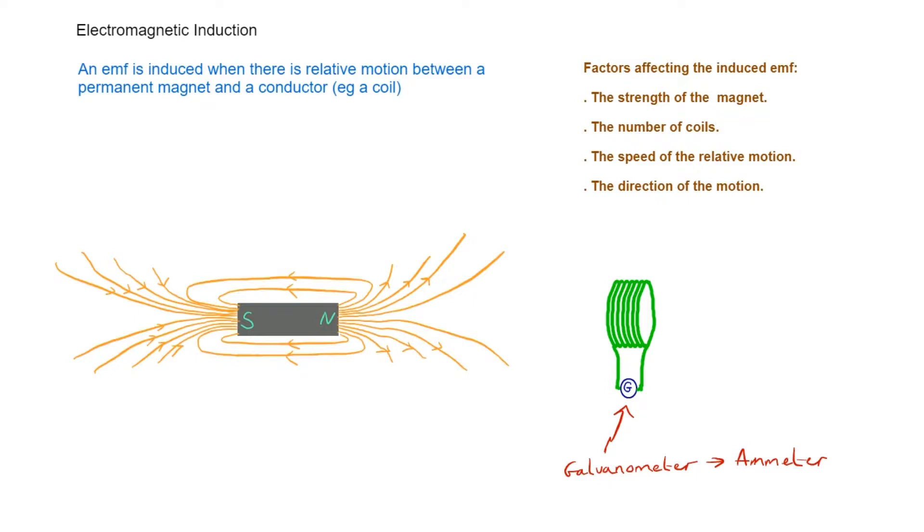Let's summarize those factors. The strength of the magnet - the stronger the magnet, the same relative motion will cause a bigger induced EMF. The number of coils in the galvanometer matters. The speed of the motion, and also the direction of the motion. We sometimes refer to this as flux cutting, that process where magnetic field lines cut across a conductor or vice versa.